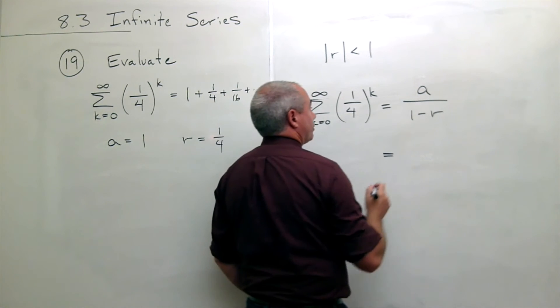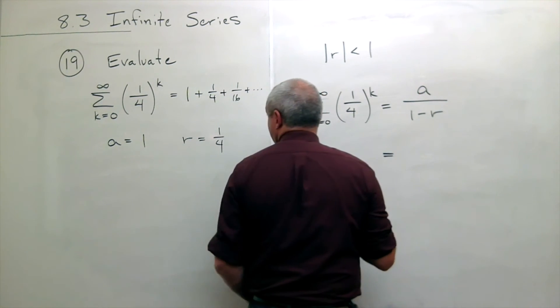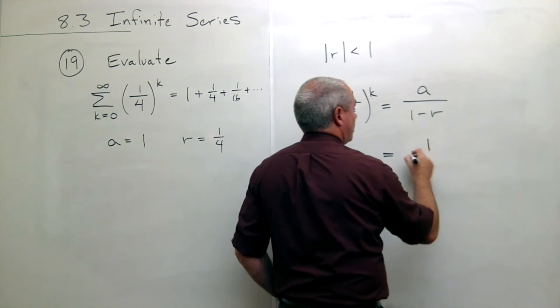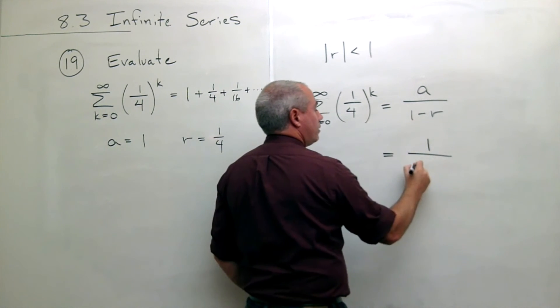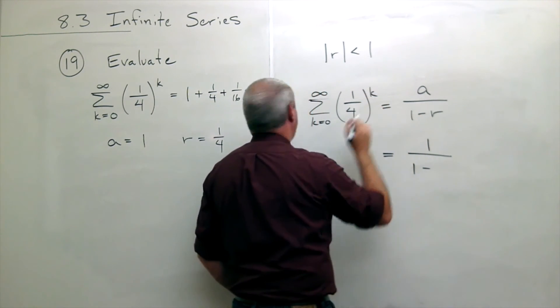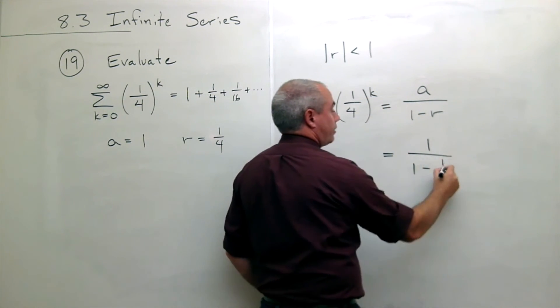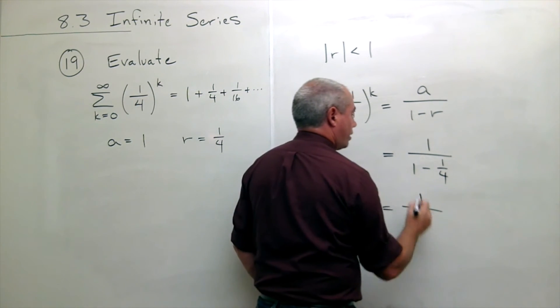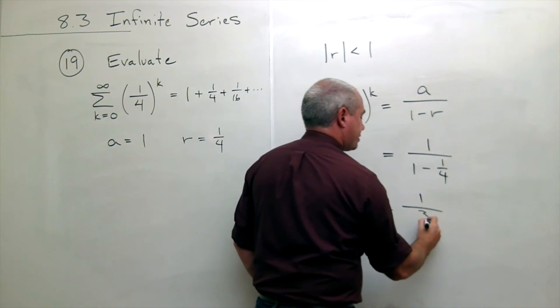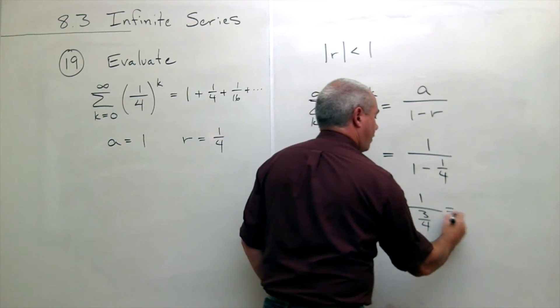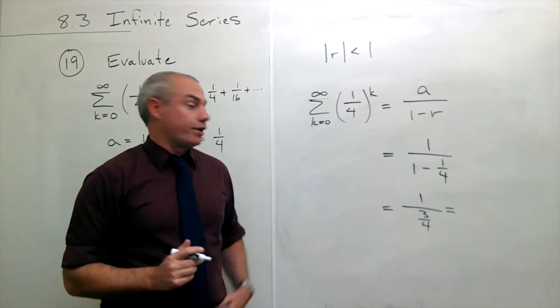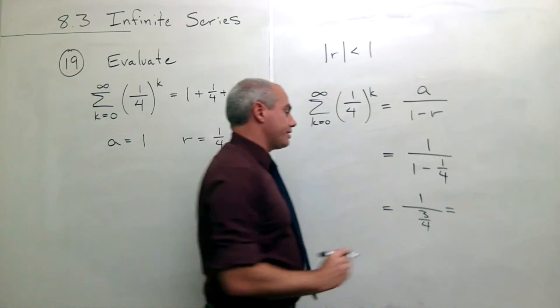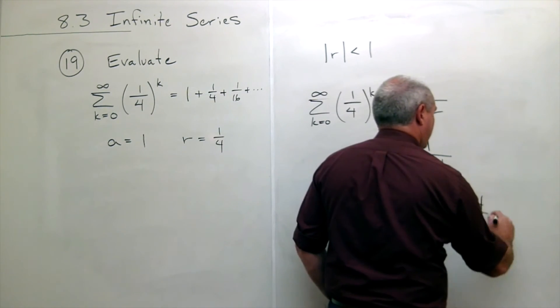It will converge to a which is one over one minus r. R we said was one fourth which is one over one minus one fourth is three fourths and one divided by three fourths just flip and multiply this guy and I get four thirds.